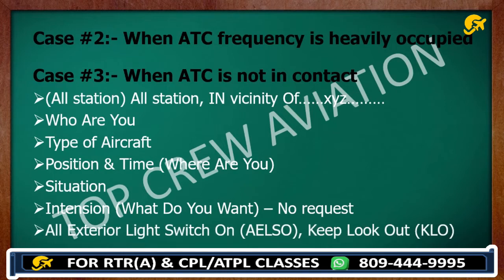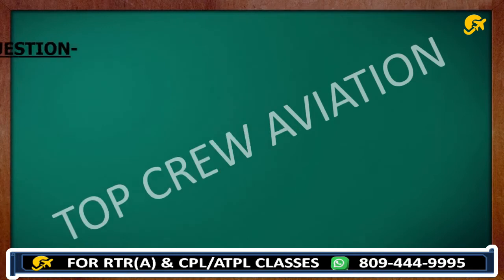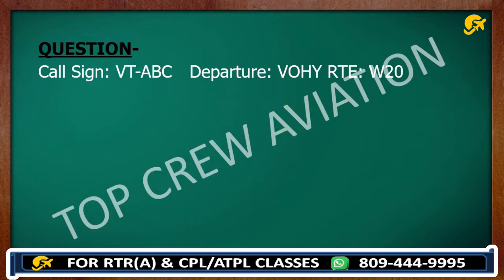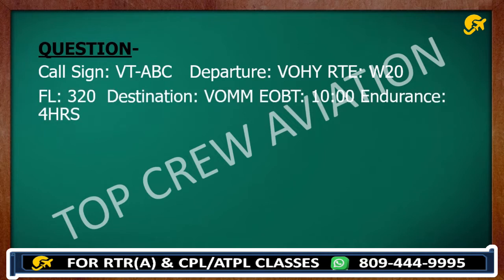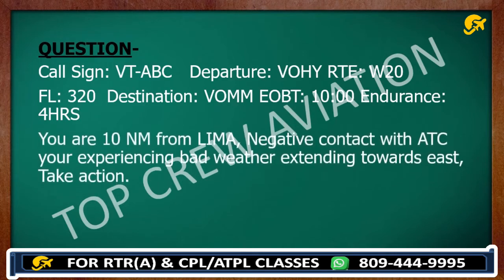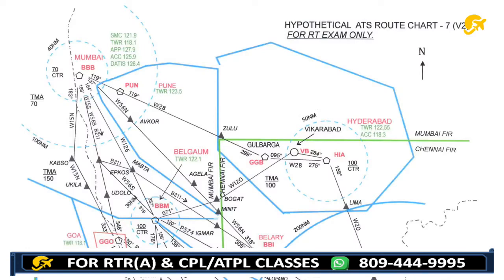Switch on all exterior lights and keep lookout. That is the format to follow when ATC is not in contact. Below is an example: your call sign is given, departure from Hyderabad, destination Chennai, route Whiskey 20, flight level 320, EOBT 1000. You are 10 nautical miles from Lima, negative contact with ATC, experiencing bad weather extending towards east. Take action.